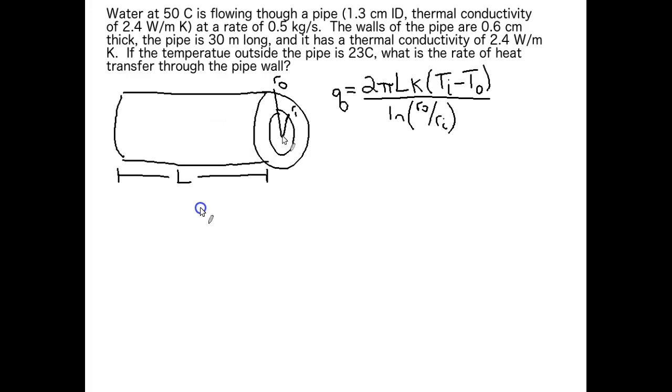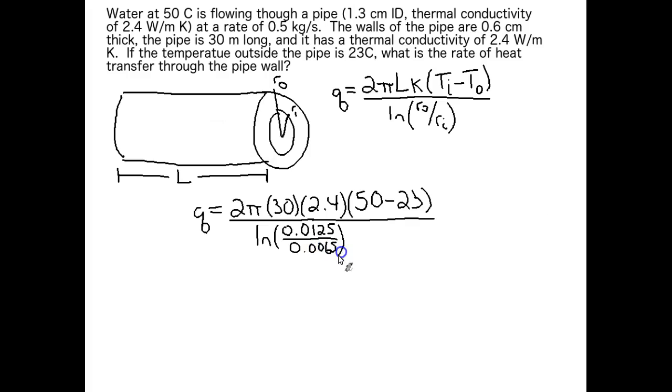Let's plug in all our values, changing all units to standard SI units. So centimeters to meters. We have watts in our thermal conductivity. So we're okay. We can go ahead, plug everything in and solve for q. And there you have it. Our rate of heat transfer through this pipe wall is 18.7 watts.